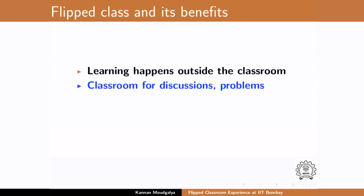In the flipped method, students do the reading outside class and come to class to further discuss or get their doubts cleared. That is what the classroom period is for — learning happens outside the classroom, and the classroom is for discussions, problem solving, and so on. Its benefits are well known, because students can learn at their own speed, at a convenient time. Some students learn very fast; others learn slowly. Those who need to can rewind the video two or three times, especially students who may not be very fluent in English.